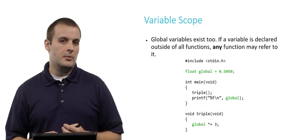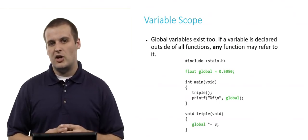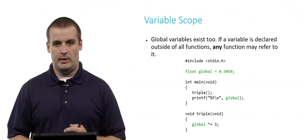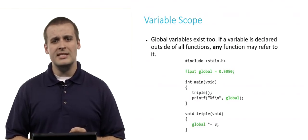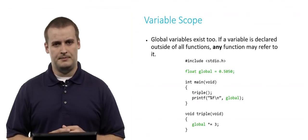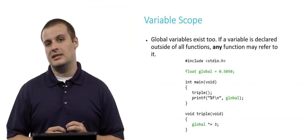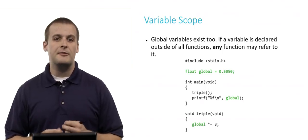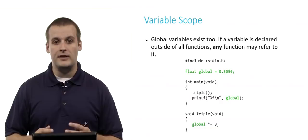Now, as I mentioned, global variables do exist. If you declare that variable outside of any function, all of the functions in the program can refer to it. So in this case, I've highlighted in green a global variable declaration. The variable being declared is called global, to be extremely clear about it. It is of type float, and I assign it the value .5050.